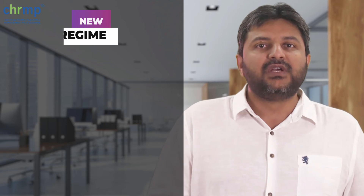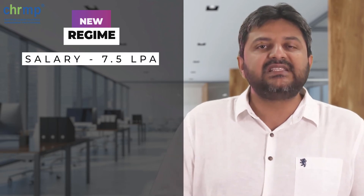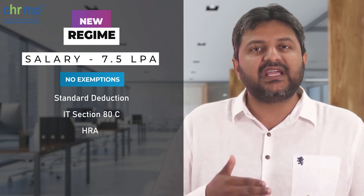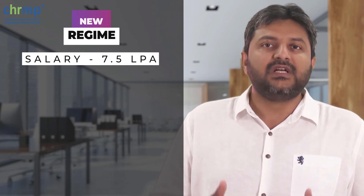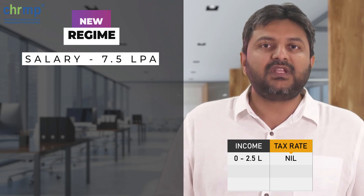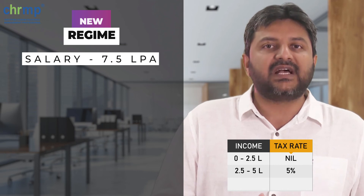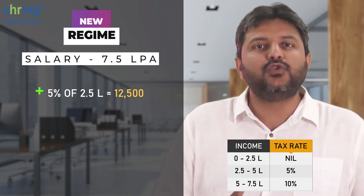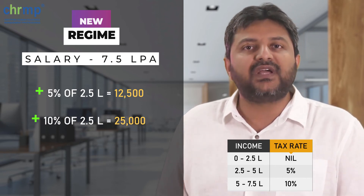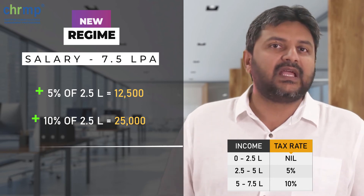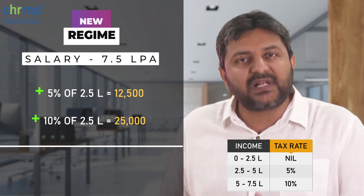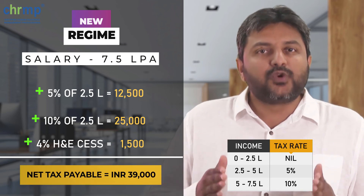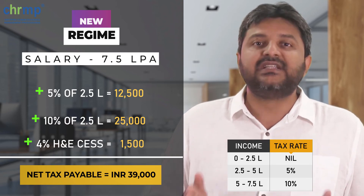Now considering the new tax regime for the same salary of Rs. 7,50,000, a simple flat rate of taxation will apply. Almost all exemptions like standard deduction, Section 80C, HRA, 80E, 80D cannot be claimed. So from 0 to 2.5 lakh there is no tax. From 2.5 to 5 lakh there is 5% tax, amounting to Rs. 12,500. From 5 lakh to 7.5 lakh it is 10% — reduced from 20% — amounting to Rs. 25,000. Adding all slabs, the net tax payable is Rs. 37,500, plus 4% health and education cess of Rs. 1,500, making the net tax payable under the new regime Rs. 39,000, which is about Rs. 5,200 less than the old regime.